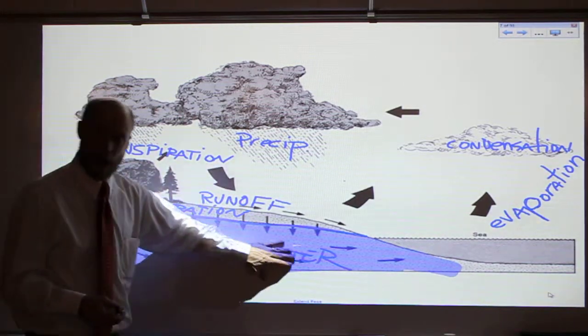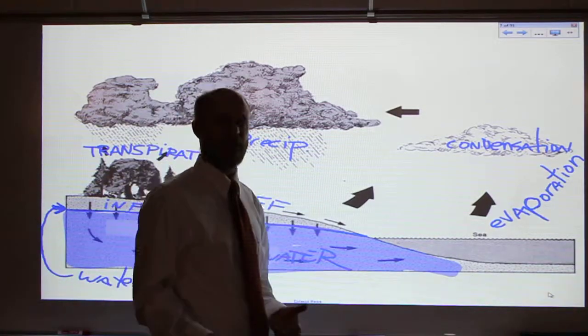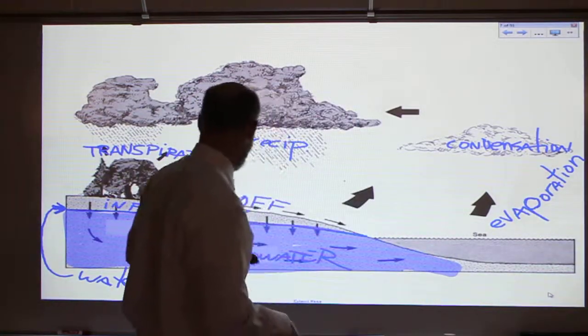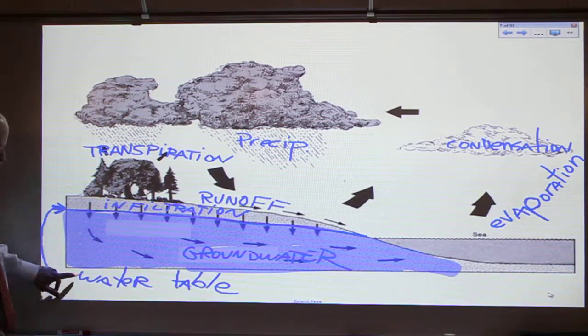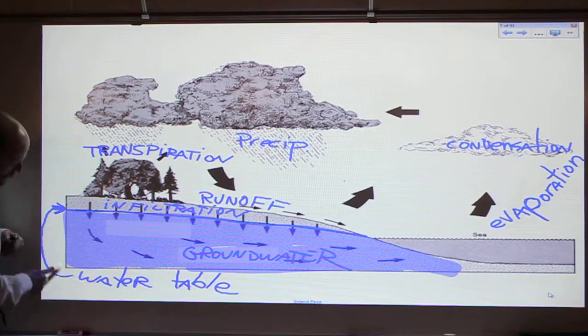We'll call this the aquifer. This water here is called groundwater. If you have a well, that's where your water comes from. You just dig down a well below the water table. I had trouble labeling here. This is the water table.